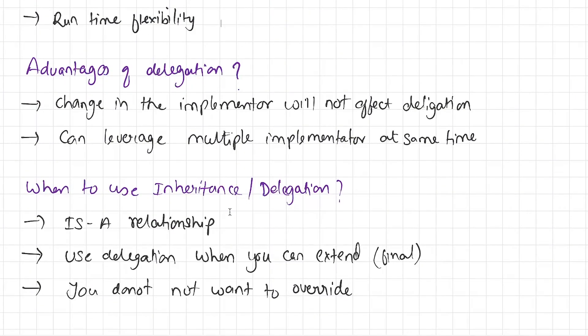Now the next question: what are the advantages of delegation? The number one advantage is, as there are many implementers of the common behavior — for example Canon printer and HP printer — tomorrow if we introduce new changes in any of the implementers, our delegation will still be operational. It will not directly impact the delegation, because we are only using a particular behavior of an implementer, not the entire implementer. In our example, we are only using the print method of Canon or HP printer. The second advantage is that we can leverage multiple implementers at the same time and change the implementer at runtime as per our need.